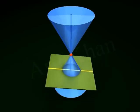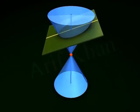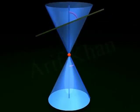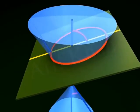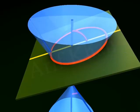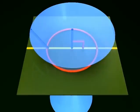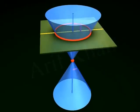Ellipse. When the plane intersects the double right circular cone in such a way that the angle between the plane and the axis is greater than the vertex angle, we get a closed curve called an ellipse. When the plane is perpendicular to the axis, the ellipse becomes a circle. Thus, a circle is a special type of ellipse.